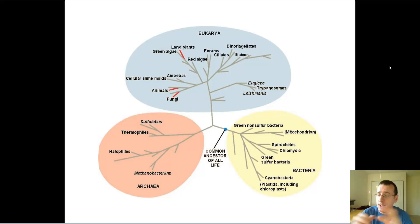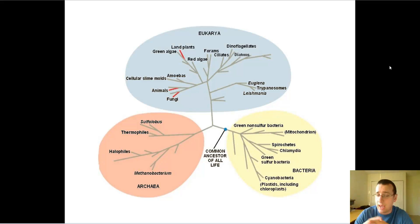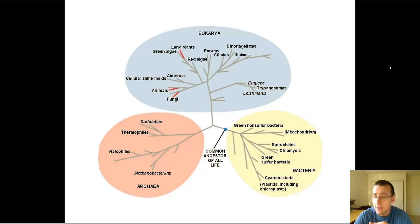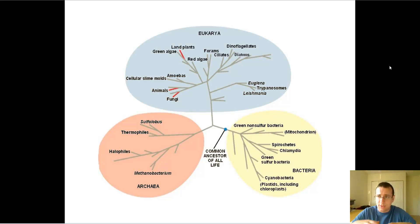And then these continents each will have different countries inside of them, which have different states, which have different counties, and which have different cities, which have different neighborhoods, which have different buildings, which have different families living inside of them, and then you have rooms within those places and so forth. You see how there's a hierarchy of organization?